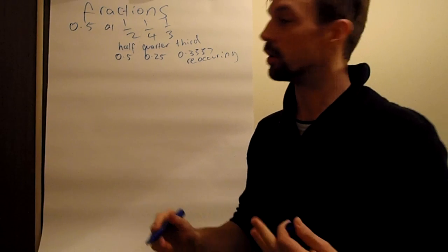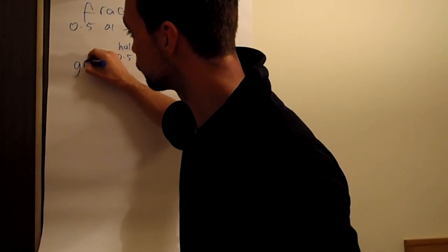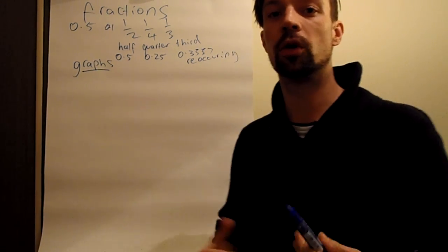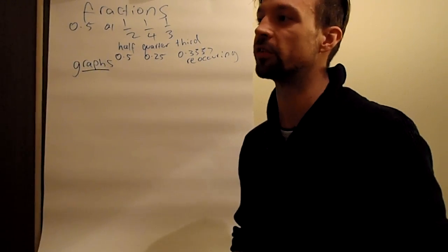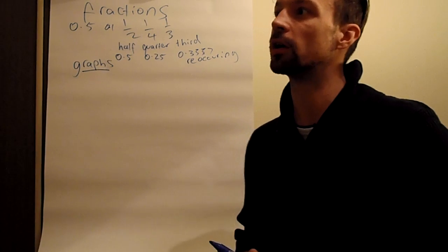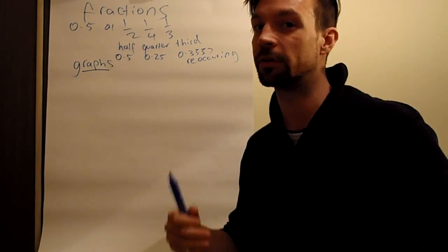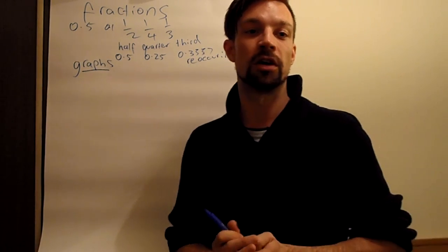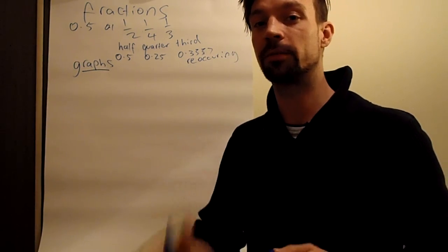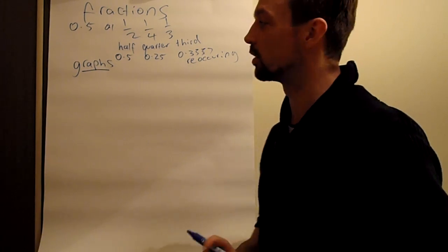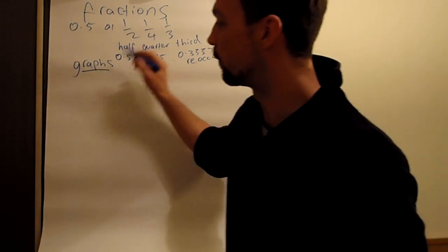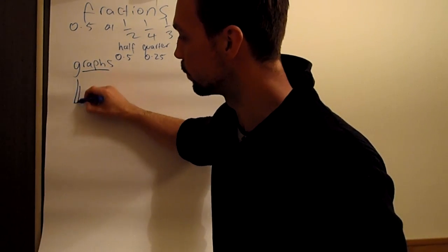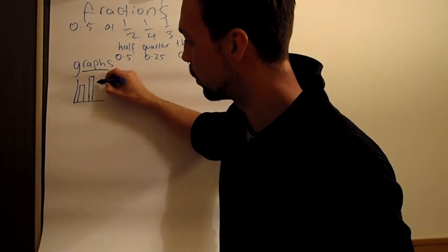The next one we have is graphs. And if you do a job where you have to do presentations, if you work with numbers, if you have to give sales figures, things like this, a lot of the time you will work with graphs. So I'm going to tell you three different types of graphs that people use to present data and information. And the first one is called a bar graph. And this is where you have bars.